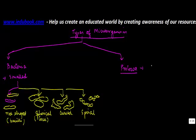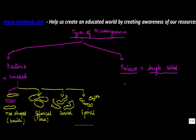Protozoa are basically single-celled. You must have learned in your earlier biology classes that each organism is made up of cells, just like the human body is made up of millions and millions of cells. So protozoa are single-celled animals, which means that they have just one cell.